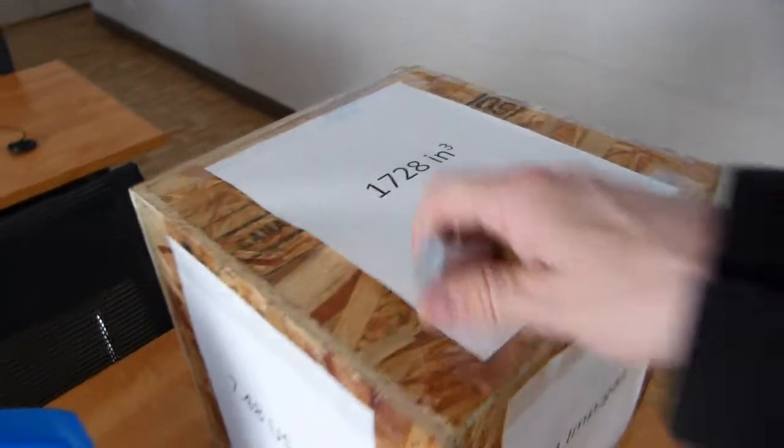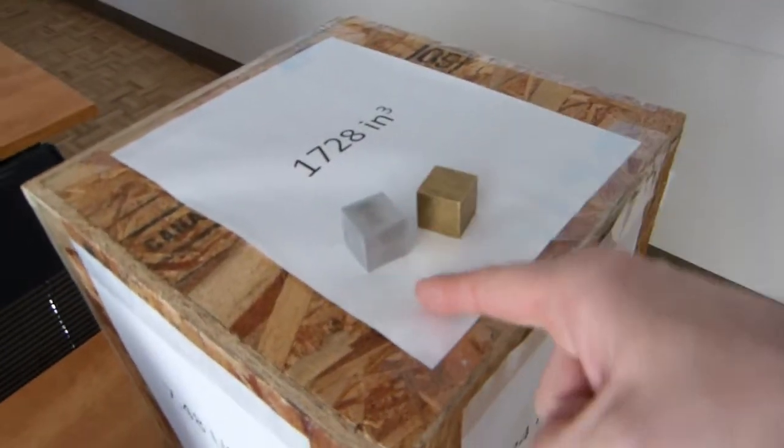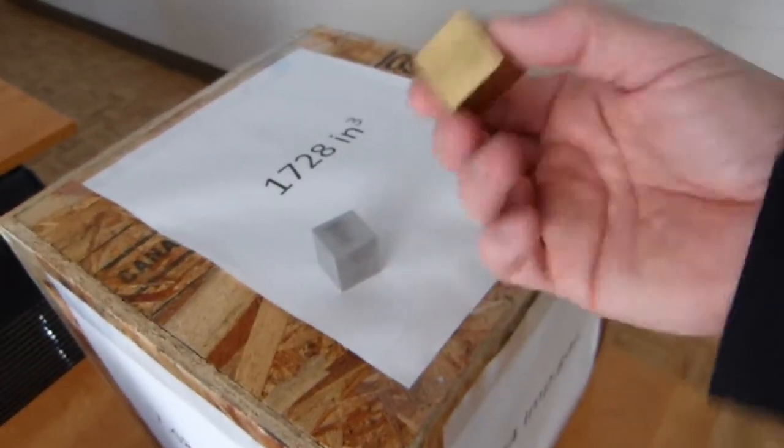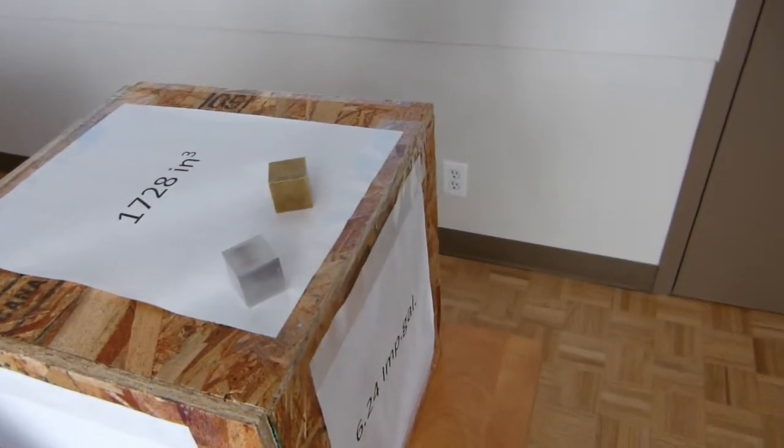These are cubic inches. A cubic inch, just like a cubic foot, is a measure of space. It doesn't matter what a cubic inch is made of, bronze, aluminum, steel, whatever, stone, it doesn't matter.